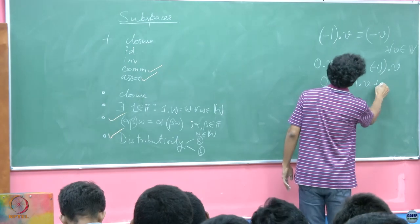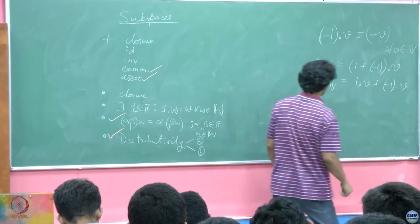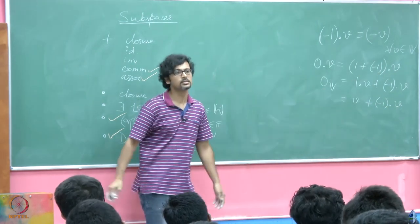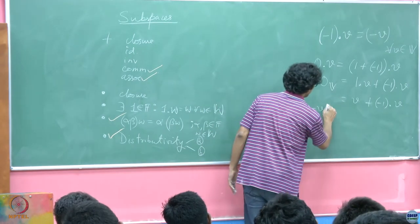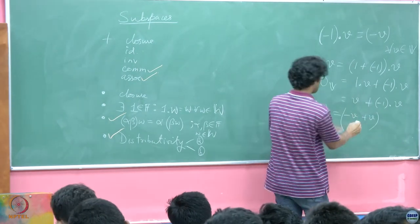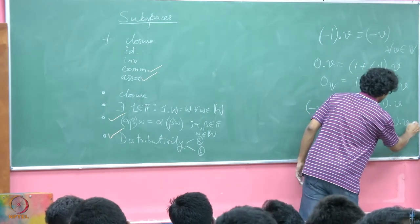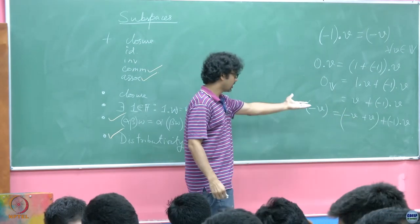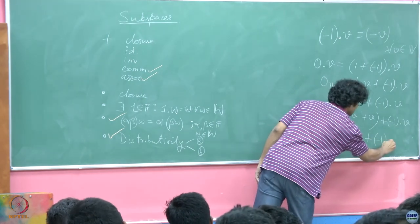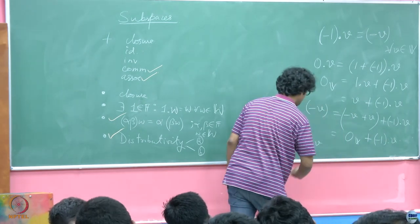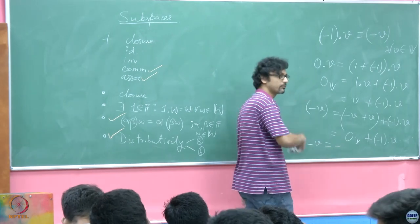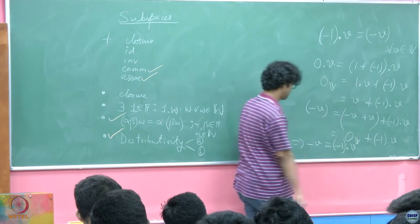By distributivity, (1 + (-1))·V = 1·V + (-1)·V, which is of course just V + (-1)·V. Now I add minus V — the additive inverse of V — to both sides and combine through associativity. This reduces to the additive identity 0 plus (-1)·V, which means the additive inverse of V is nothing but (-1)·V — the additive inverse on the field of the multiplicative identity acting on the vector.